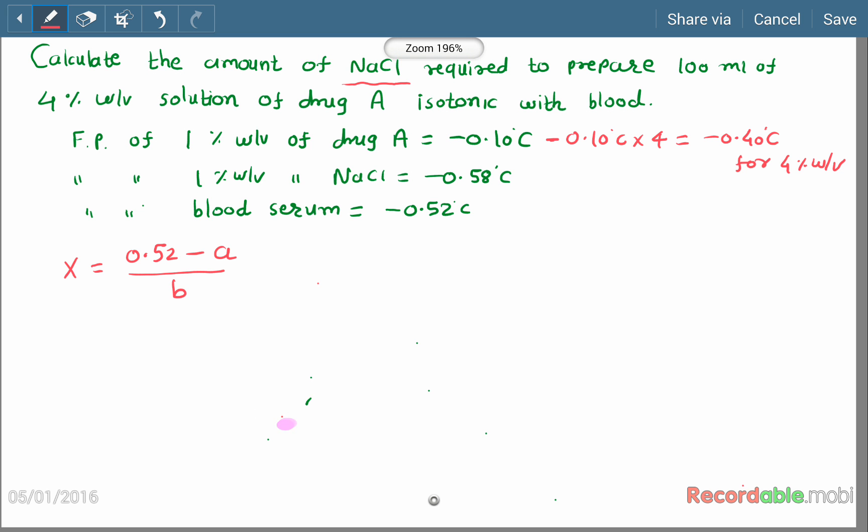Here x is the amount of sodium chloride in grams per 100 ml. a is the freezing point of the drug solution. b is the freezing point of 1% weight by volume of the adjusting substance.